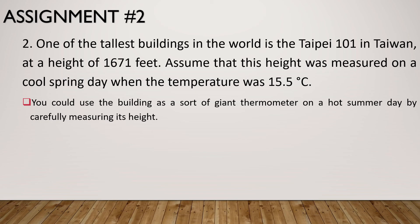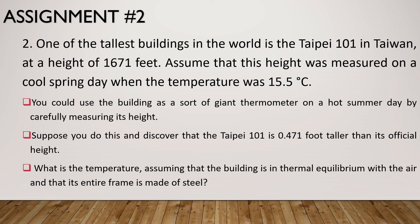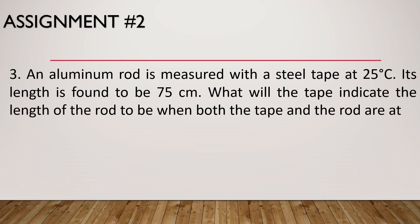Now you could use the building as a sort of giant thermometer on a hot summer day by carefully measuring its height. Suppose you do this and discover that the Taipei 101 is 0.471 foot taller than its original height. What is now the temperature, assuming that the building is in thermal equilibrium with the air and that its entire frame is made of steel? Last question: an aluminum rod is measured with a steel tape at 25 degrees Celsius; its length is found to be 75 centimeters. What will the tape indicate the length of the rod to be when both the tape and the rod are at first 0 degrees Celsius and second at 50 degrees Celsius? Again, you have to answer these three problems and submit it anytime in our Google Classroom. That would be all, thank you and God bless.